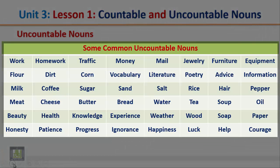Here are some common uncountable nouns. All the nouns in this list don't have a plural form, cannot be preceded by 'a' or 'an,' and cannot be counted with numbers. These words include: work, homework, traffic, money, mail, jewelry, furniture, equipment, flower, dirt, corn, vocabulary, literature, poetry, advice, information.